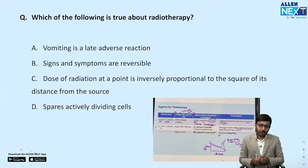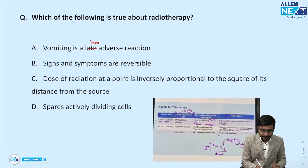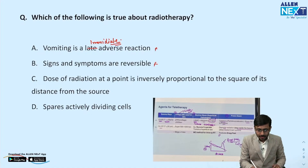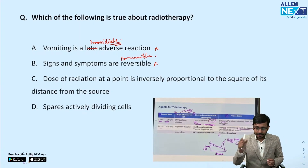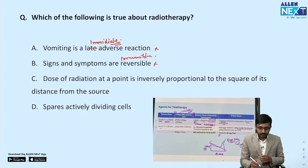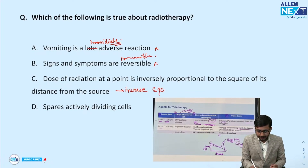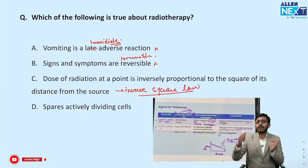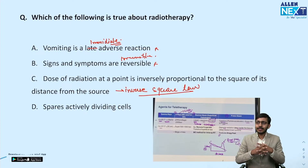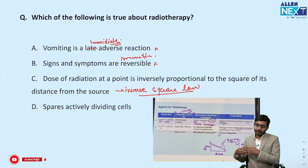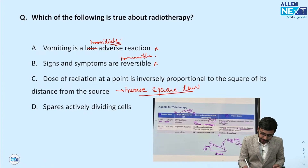Coming on to a question from radiotherapy: which of the following is true? Vomiting is a late adverse reaction — no, it is an immediate adverse reaction. Signs and symptoms of radiotherapy are reversible — no, they are irreversible. The dose of radiation at a point is inversely proportional to the square of the distance from the source — yes, this is the inverse square law. If we double the distance from the source, the dose decreases by one-fourth.